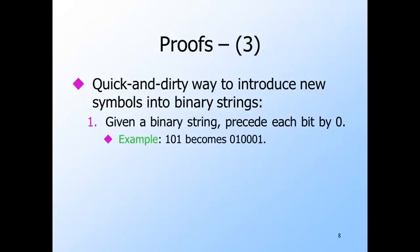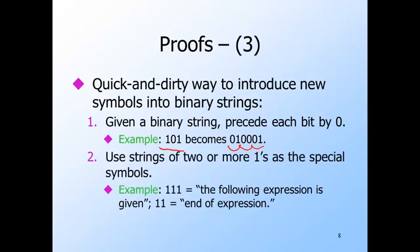The following technique is useful here and in general as a way to introduce new symbols into binary strings while still keeping the strings binary. First, given a binary string, expand it by inserting a zero in front of every bit of the string. For example, 101 becomes 01 00 01. As a consequence of this change, strings have no consecutive ones. Then use strings of two or more ones as the new symbols. For example, use 111 to mark a given expression, and 11 as the marker for the end of an expression.